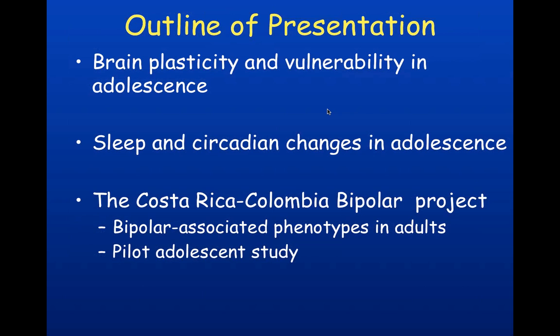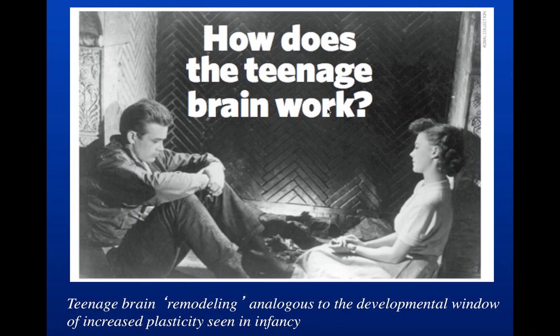Today we'll start with the concept of brain plasticity and how it relates to vulnerability, particularly vulnerability to mood disorder in adolescence. Sleep and circadian changes are one of the critical factors that occur during the adolescent period — shifts in circadian rhythms. At the end, I'll talk about a new project in Latin America looking at genetic and environmental risk factors for mood disorder, and potential lifestyle interventions.